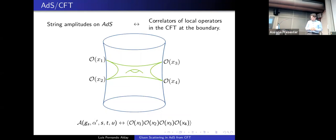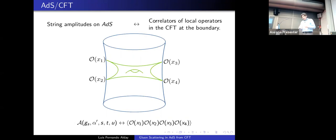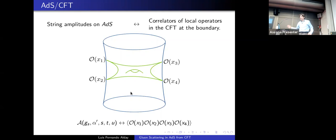The basic strategy will be to use the AdS/CFT duality and to map a scattering amplitude in AdS to correlators of local operators in the dual conformal field theory at the boundary. When you compute scattering amplitudes you have to define asymptotic states, but this is not easy in AdS because AdS is like a box. AdS/CFT tells you that to compute a scattering amplitude in AdS, you compute a correlator of local operators at the boundary.